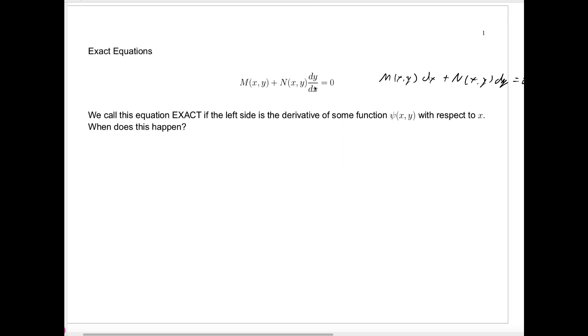What does it mean to say that this is exact? It means that the left side here is just the derivative of some function c(x,y) with respect to the independent variable x. Remember, x is our independent variable. We're thinking of y as a function of x, so we can think of c(x,y) as a function just of x.